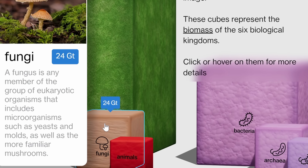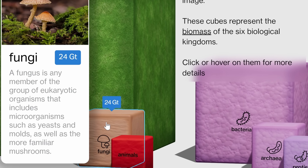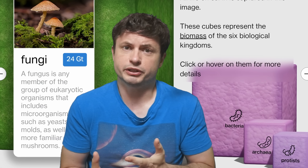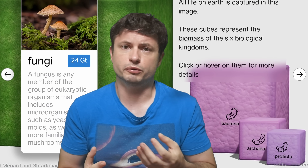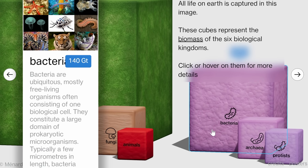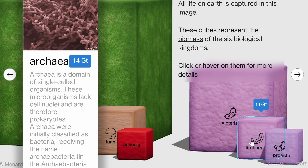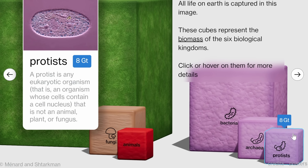In the middle here we have fungi at 24 gigatons, and their primary role in this relationship is as a kind of decomposer. Along with bacteria, they essentially get rid of anything that died, recycling all of the resources for future use. On the right we have bacteria at 140 gigatons, archaea at 14 gigatons, and protists at 8 gigatons.